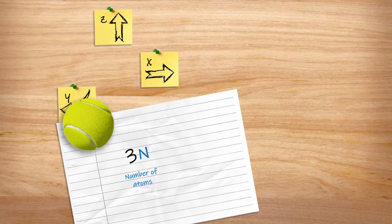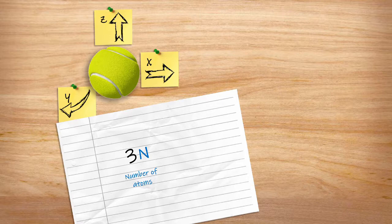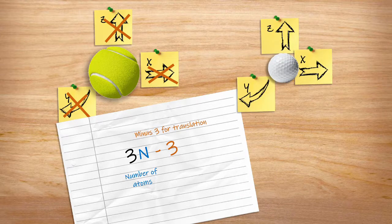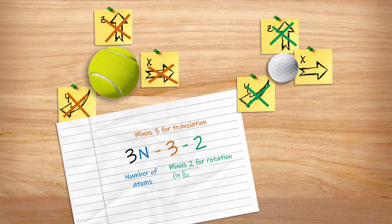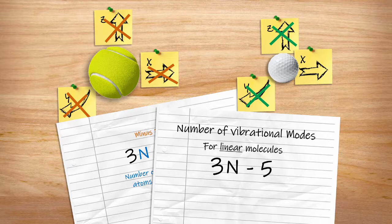Consider a lone atom. If it moves in three dimensions, it's simply a translation. There is no vibration. So we need to at least subtract three degrees of freedom. Now consider a pair of atoms. Some combinations of movement actually induce rotations, so we need to subtract two more. So for any linear molecule we need to subtract five degrees of freedom to remove translations and rotations. For a non-linear molecule you need to subtract six.